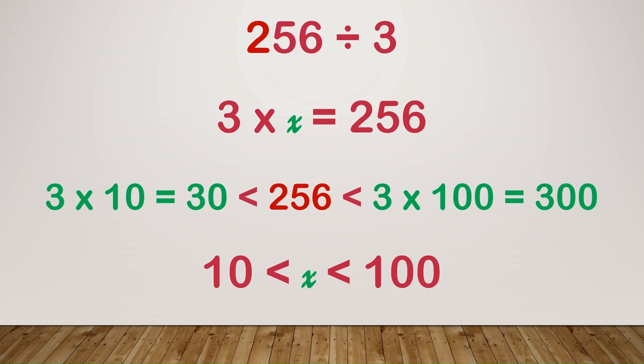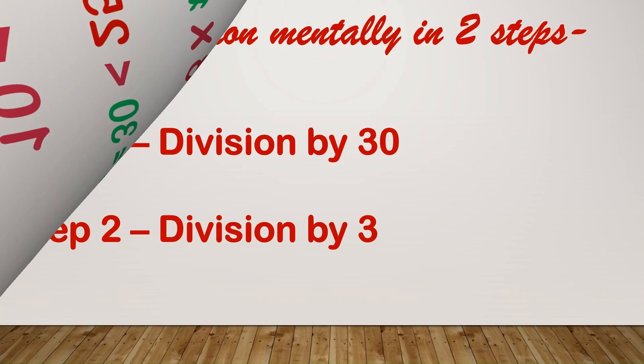In the conventional division method, we would first divide 25 by 3, subtract, bring down 6, and divide by 3 again. But since we want to divide mentally, we will straight away divide 256 instead of splitting it as 25 and 6.